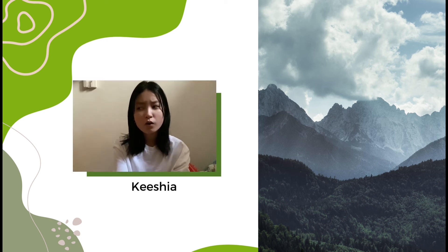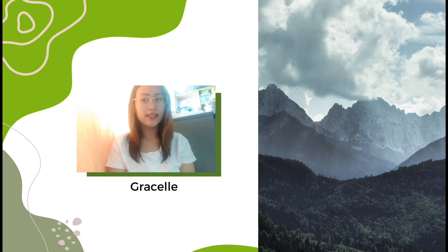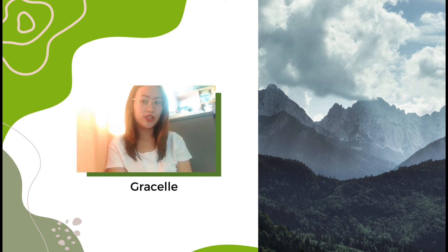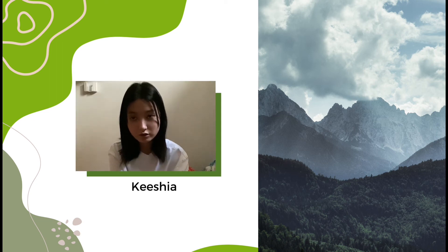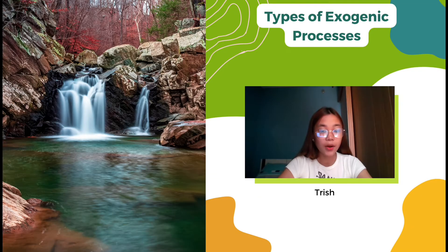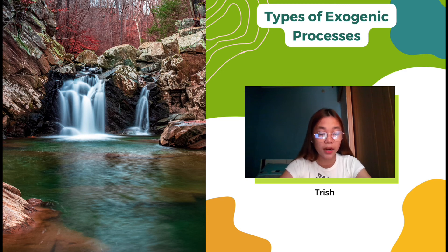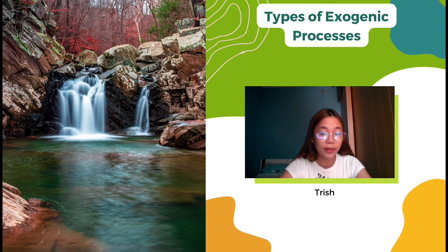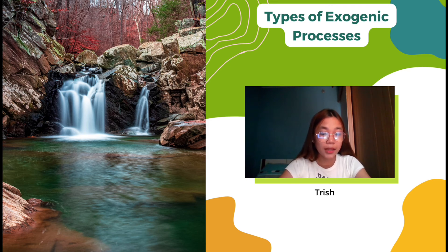What about exogenic processes? That's the type of process that takes place near or at the Earth's surface. These are part of the denudation process, which involves wearing away the Earth's surface. The three types of exogenic processes are weathering, erosion, and deposition. Weathering is the process by which surface and subsurface rocks are disintegrated, dissolved, or broken down — there are two types: physical and chemical weathering. Erosion is when pieces of the Earth are broken down by weathering and carried away. Deposition is a constructive process that lays down weathered and eroded materials in a location different from their source.